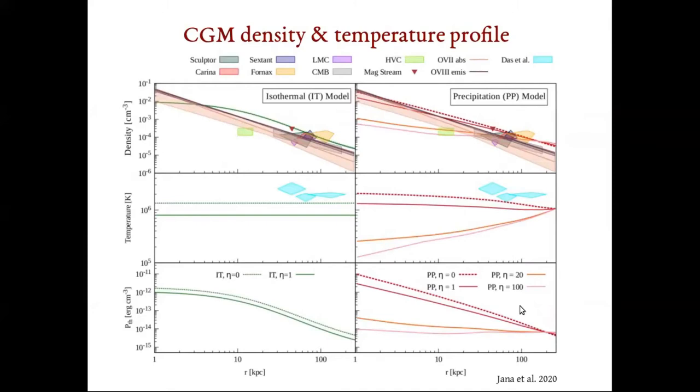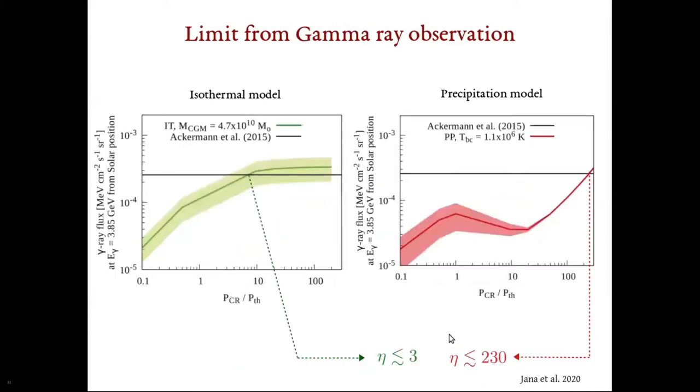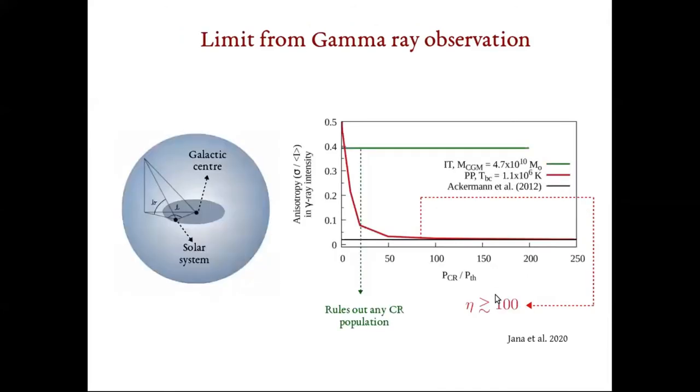Using these density and temperature profiles, we calculated the radio and gamma-ray flux. The radio synchrotron flux does not constrain the isothermal model but puts an upper limit of eta less than equal to 400 for the precipitation model. Then we calculated the gamma-ray flux at a particular frequency. The figure here shows that the isotropic gamma-ray background flux puts an upper limit of eta less than equal to 3 for the isothermal model and eta less than equal to 230 for the precipitation model.